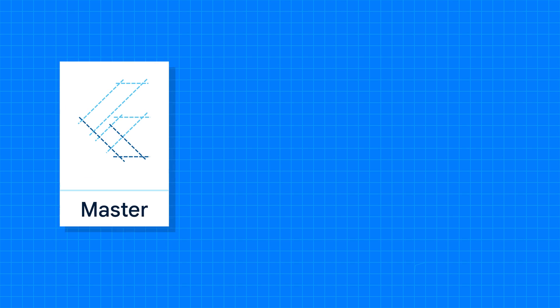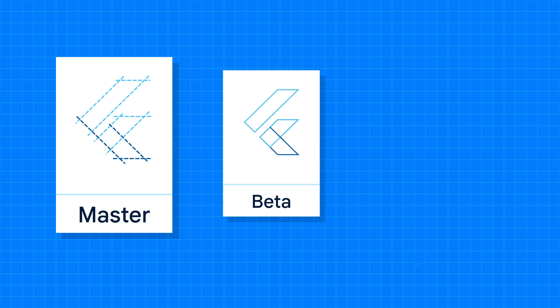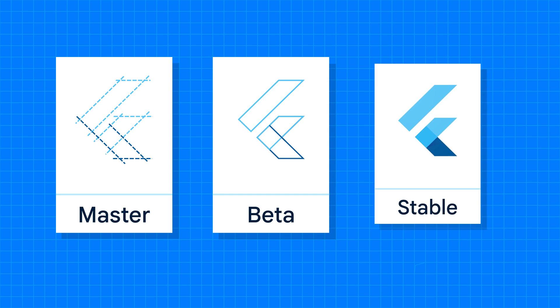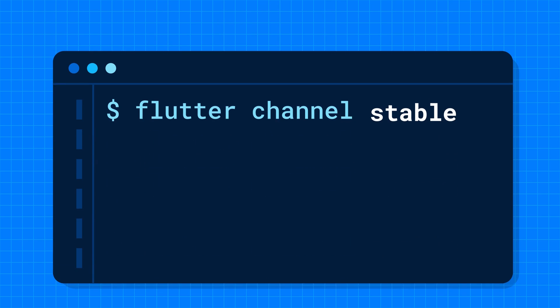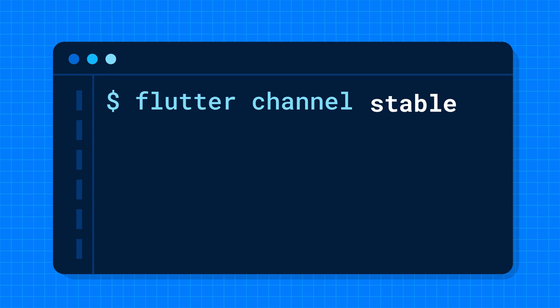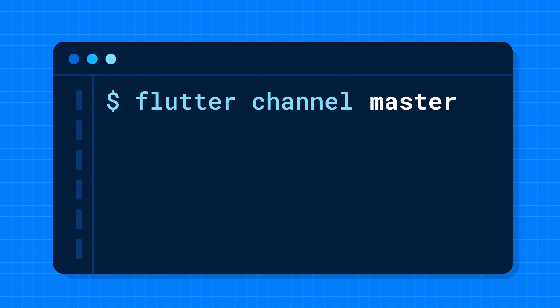There are three different release versions available for developers to use at any given time: Master, Beta, and Stable. The Flutter SDK defaults to the Stable channel on your development machine, but you can switch between each of these using the Flutter channel command.